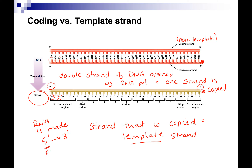The 5' end is where the promoter is — the promoter is actually not copied, but that's the area — and the 3' end is where the terminator is. The RNA is anti-parallel to the DNA strand, just like we saw in DNA replication.